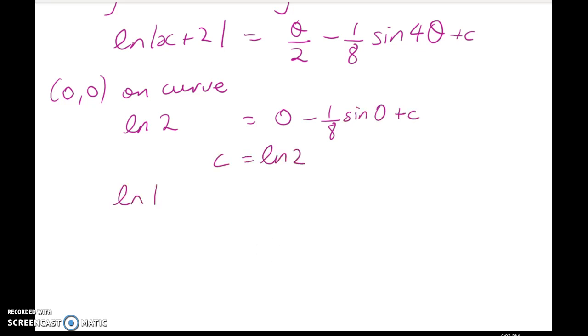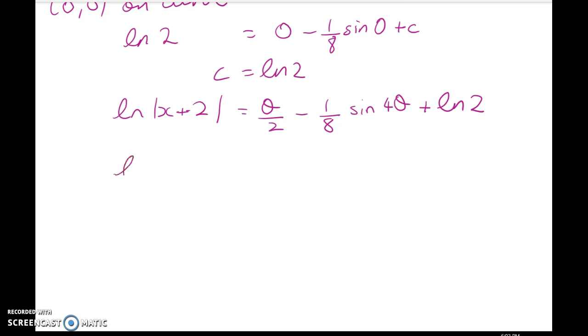So my DE is now this. Now the last part of the question requires us to figure out what x is when theta is equal to pi on 4. So log of x plus 2 is equal to pi divided by 8 minus 1 eighth sin of 4 lots of pi on 4 plus log of 2.